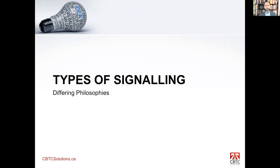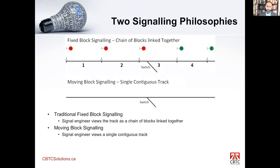Now we'll go into types of signaling — fixed block and moving block signaling. What you see here is two tracks: one showing fixed block signaling and the second showing moving block signaling. A conventional signal engineer views the track as a chain of blocks linked together with signals indicating when a train can move. A CBTC engineer, however, sees a single contiguous, unbroken track all the way along the line. That is the biggest difference between the two types of signaling.